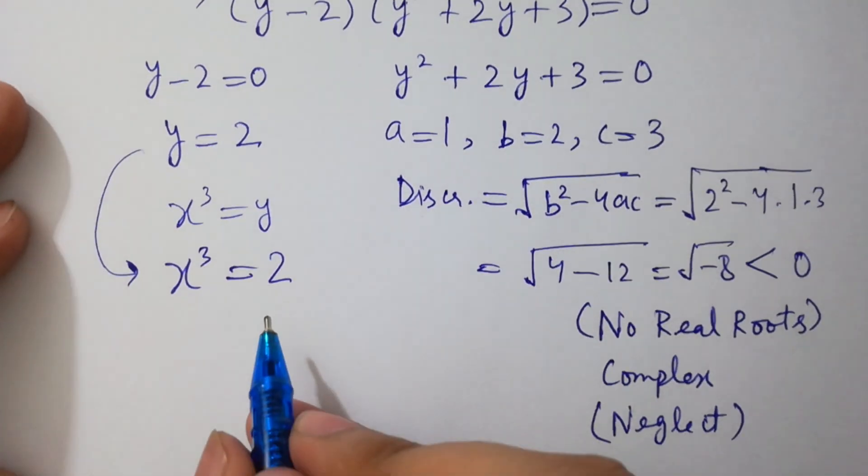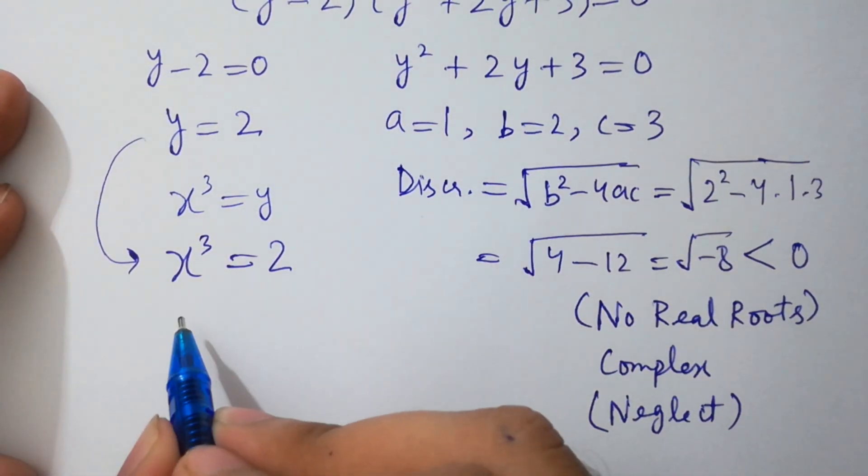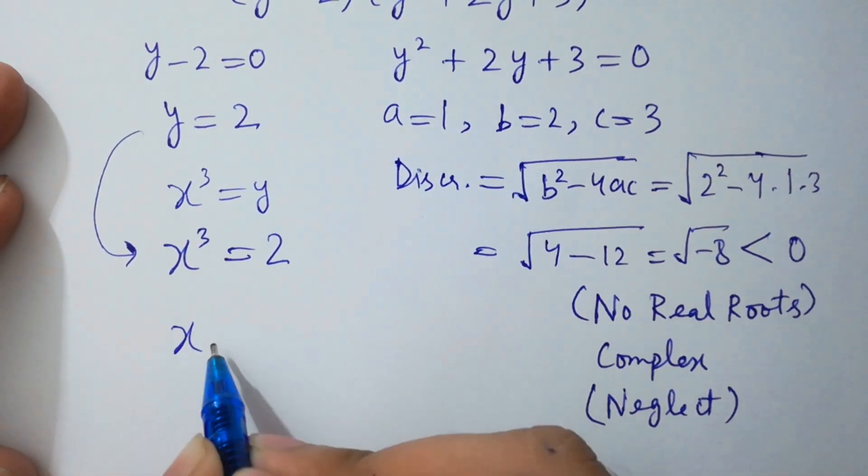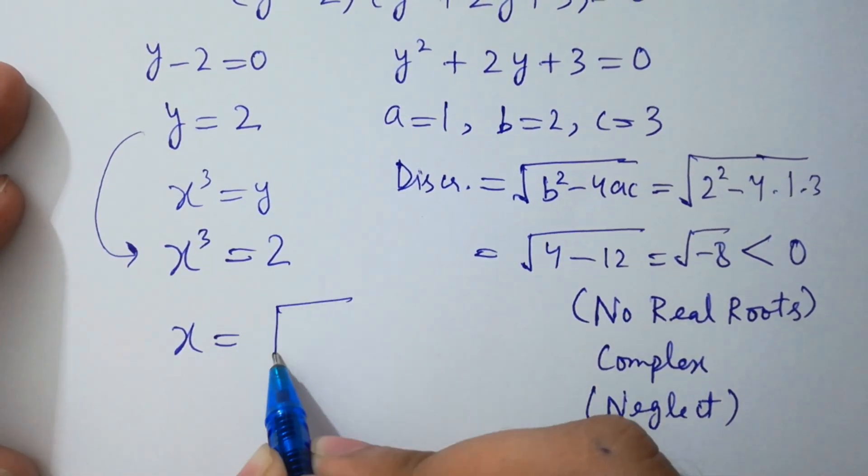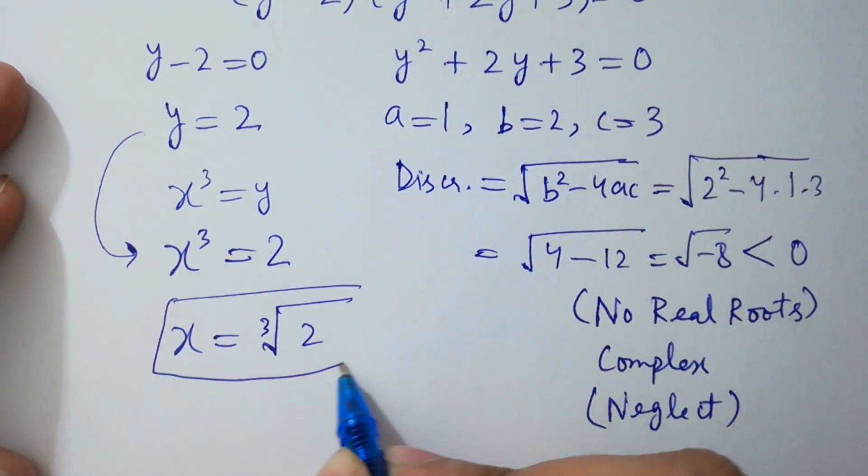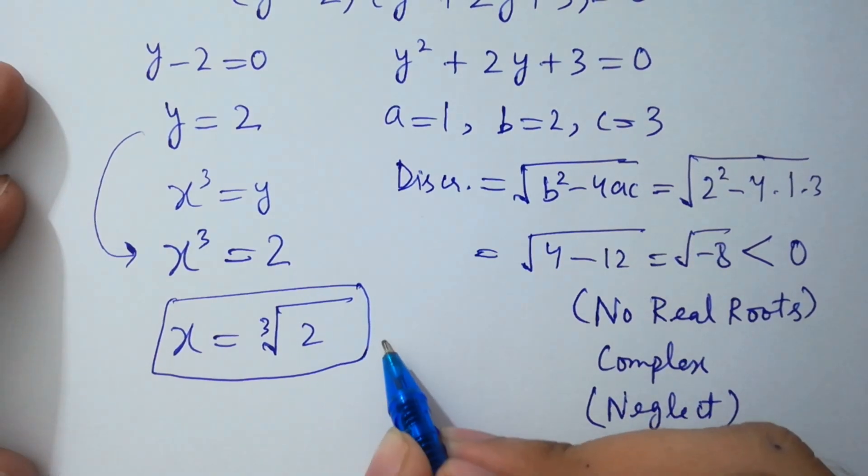Apply now here, cube root on both sides, we get x equal to cube root of 2, which is our real solution.